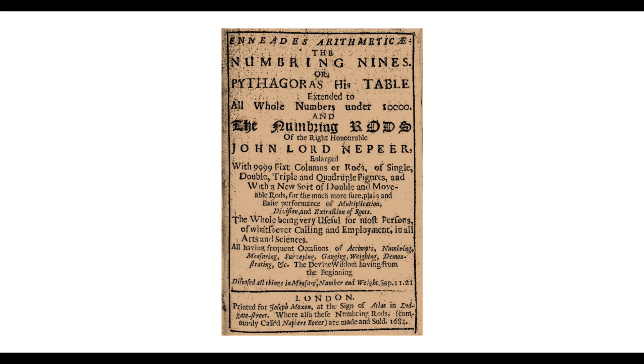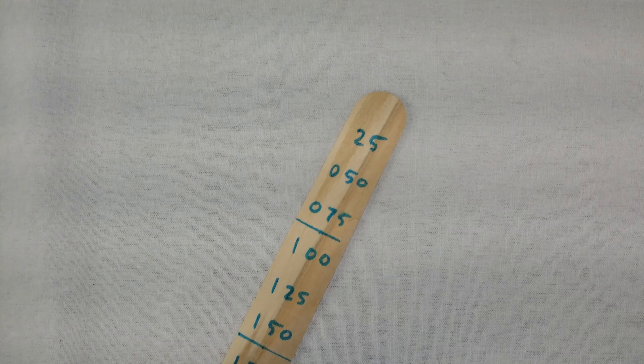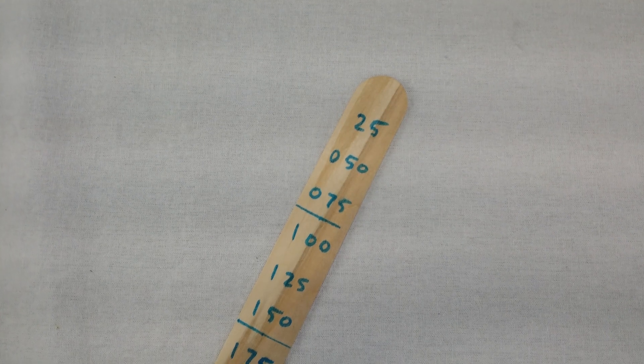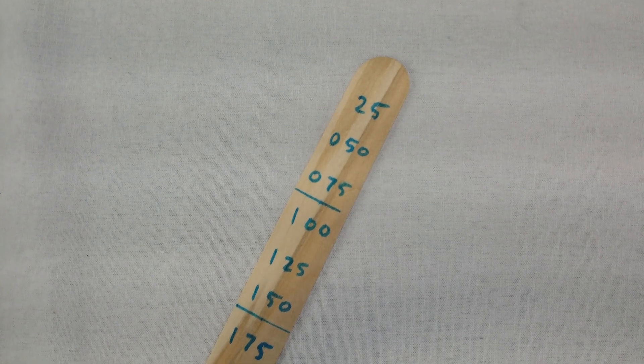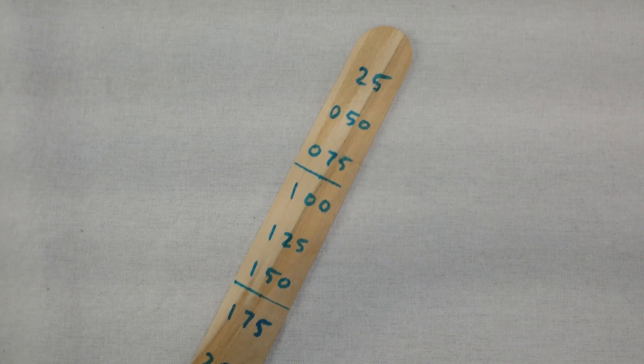And 10 years later, he published this book. The Latin title is Eniades Arithmeticae, which means something like arithmetical nines. Each of these sticks here have nine numbers written on them. So he called each stick an eniad, which comes from the Greek word for the number nine. The numbering nines. I kind of like the sound of it, though to be honest, I can't tell if it's a good name or a terrible one.